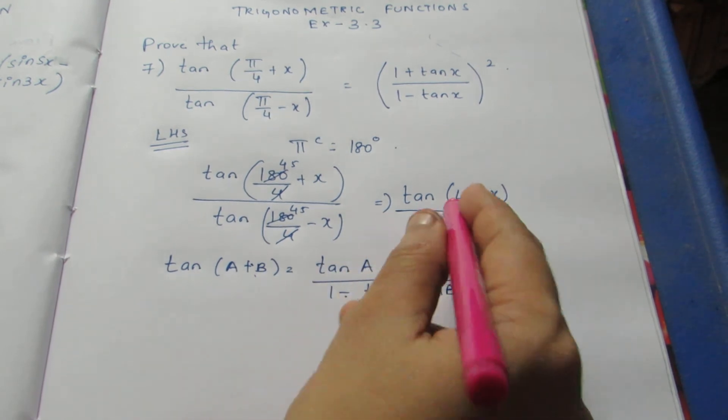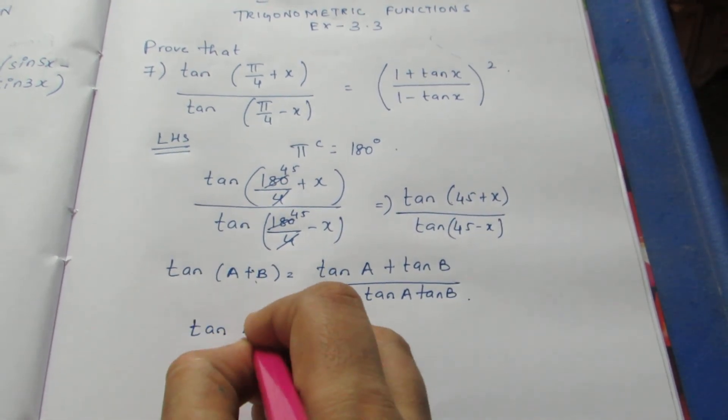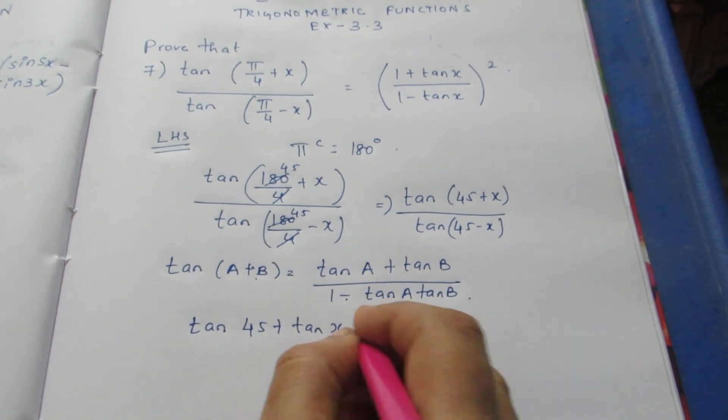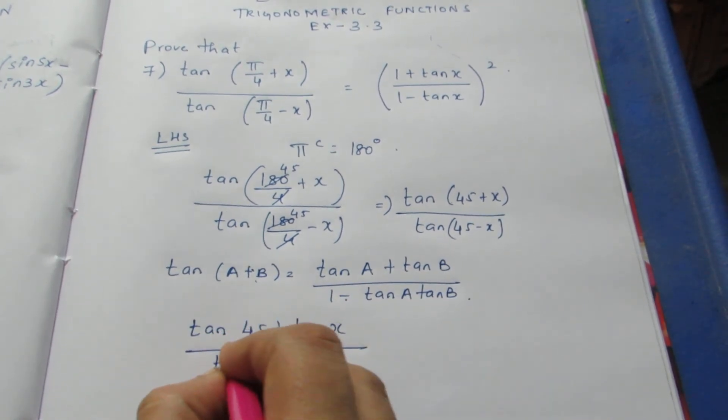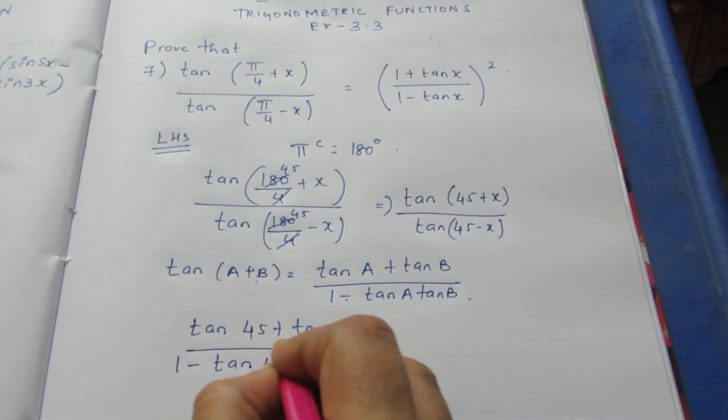Here, in the numerator, I can write this to be tan 45 + tan x. If I substitute this formula, I get this by (1 - tan 45 · tan x).